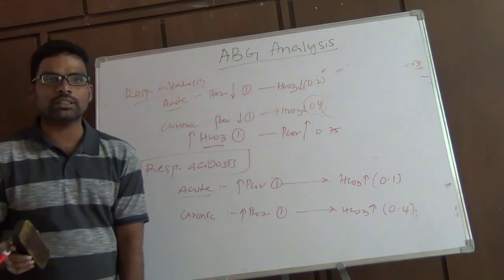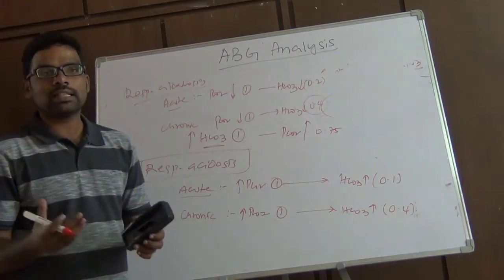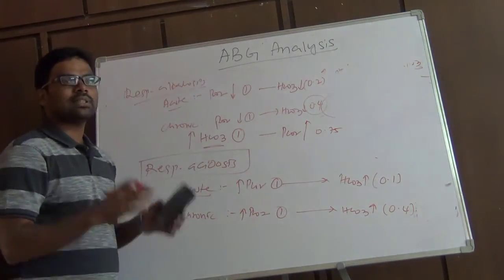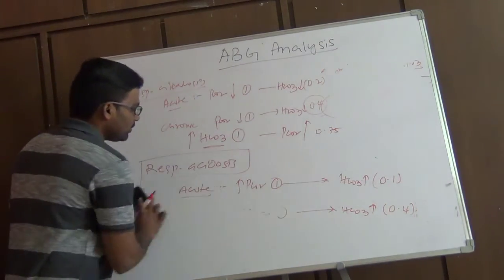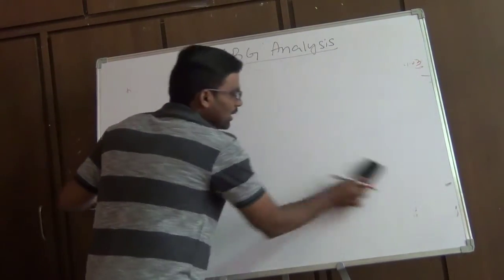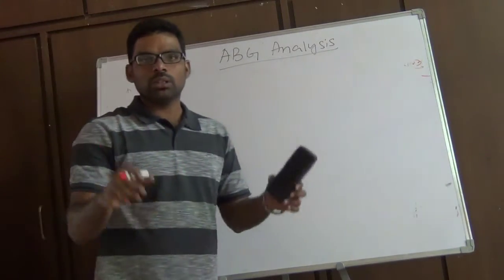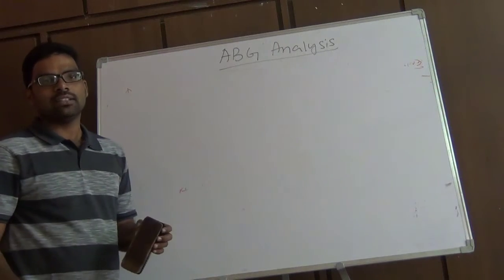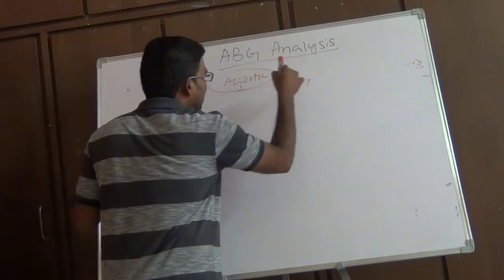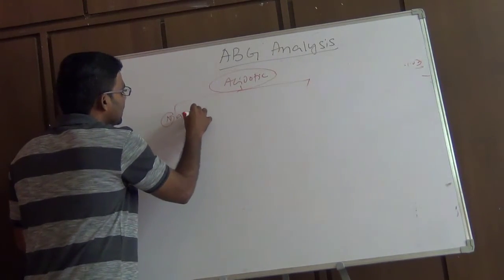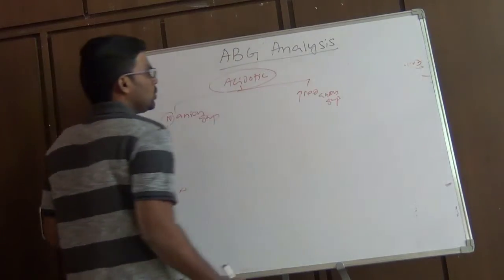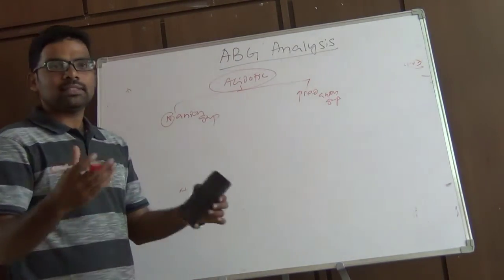So the four steps are: Step 1 — determine from pH whether it is acidosis or alkalosis; Step 2 — identify the primary event; Step 3 — identify the compensatory mechanism; Step 4 — determine whether compensation is normal or not. If encountering an acidotic condition, we must also divide it into normal anion gap acidosis or increased anion gap acidosis.